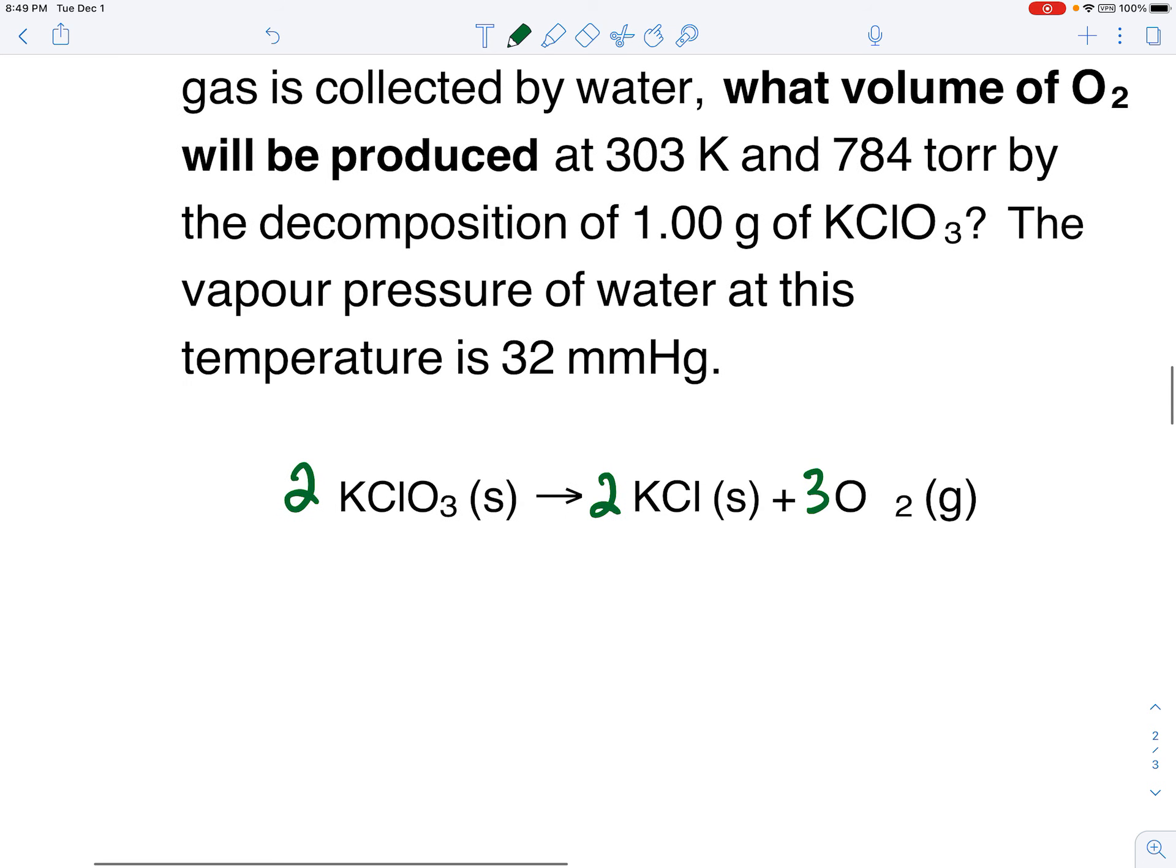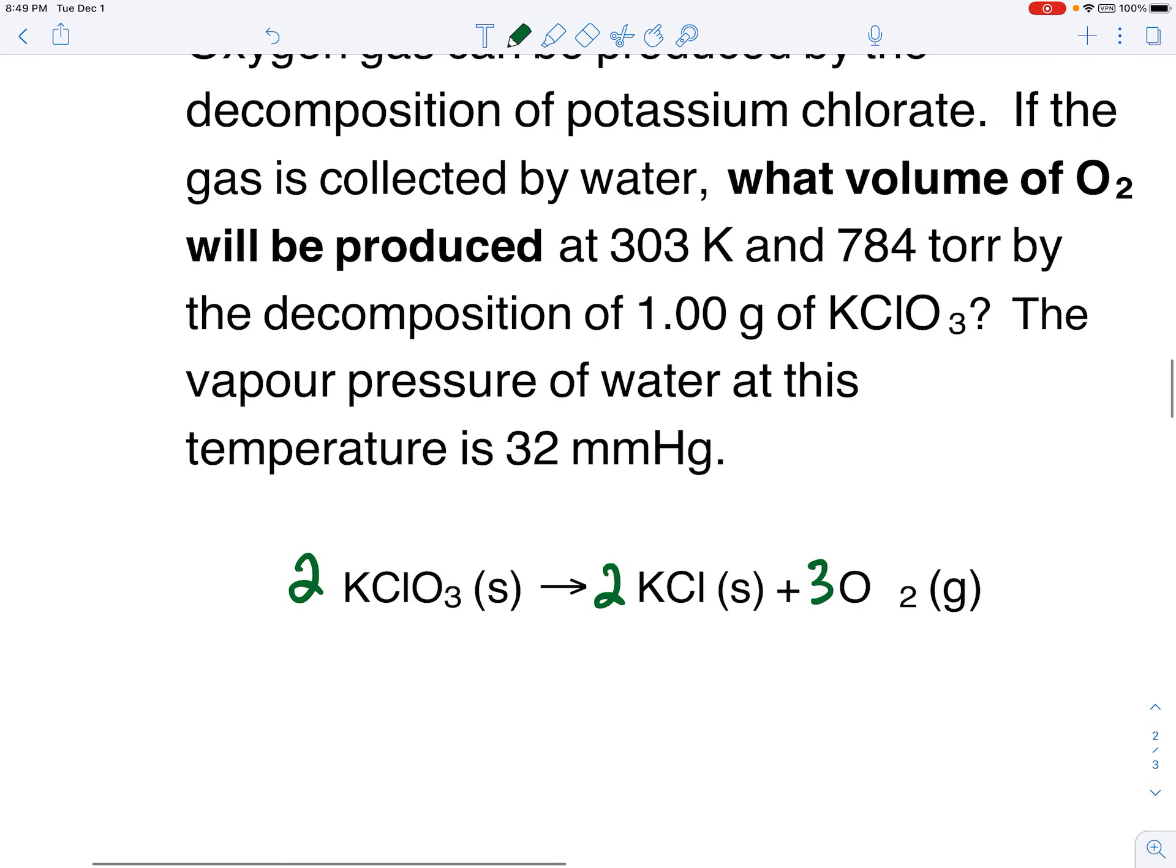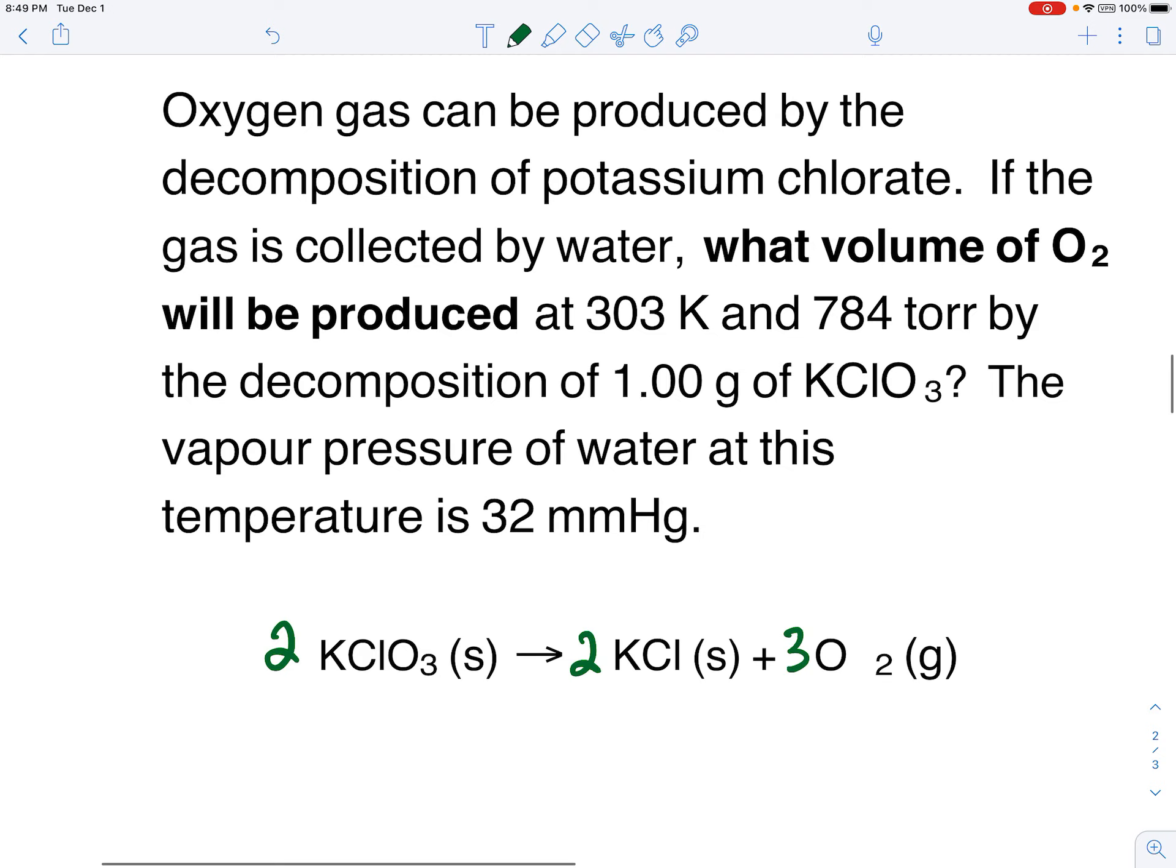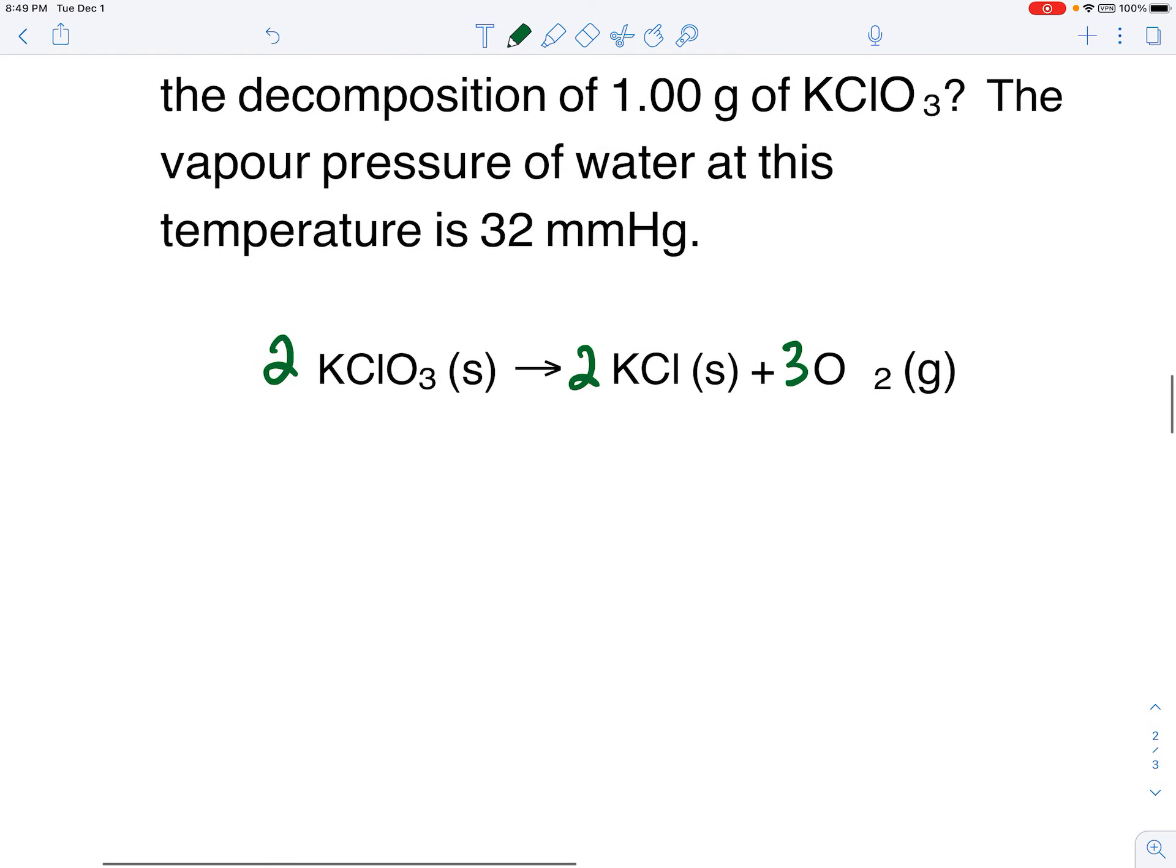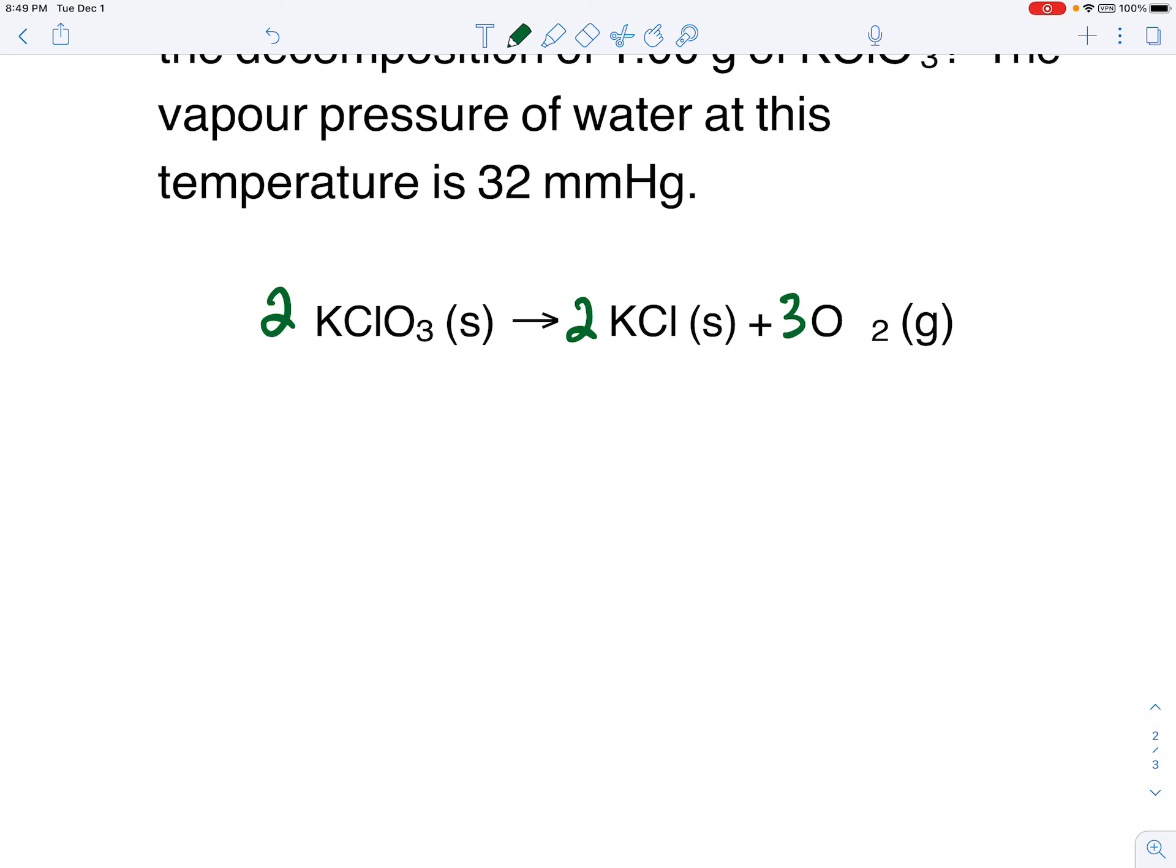Now the question is what volume of the oxygen would be produced at this temperature and this pressure by decomposing one gram of the potassium chlorate. And then we're also told that the vapor pressure of water is 32 millimeters. I neglected to point out up above, it says that the oxygen is being collected by water displacement. Okay, it's being collected over water. So let's jump in.